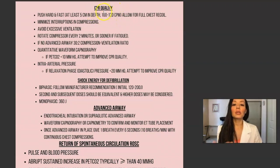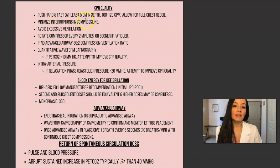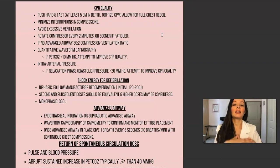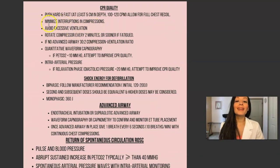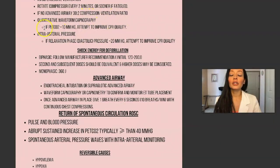These are additional notes regarding the algorithm. You need to push hard and fast — at least five centimeters in depth, 100 to 120 compressions per minute. You need to allow for full chest recoil — think 'Staying Alive.' You want to minimize interruptions in compressions, avoid excessive ventilation, and rotate the compressor every two minutes or sooner if fatigued. If no advanced airway, do 30 compressions to two breaths. Use quantitative waveform capnography to monitor the effectiveness of CPR.